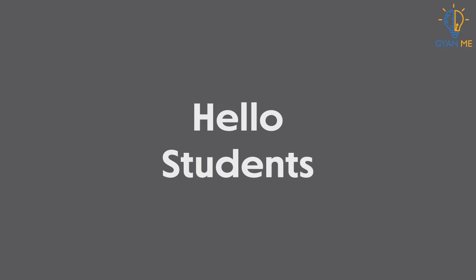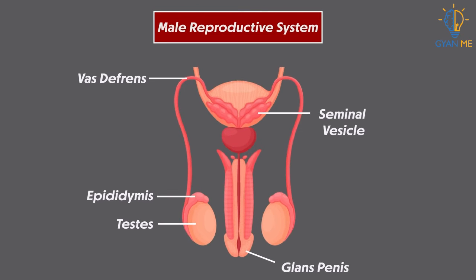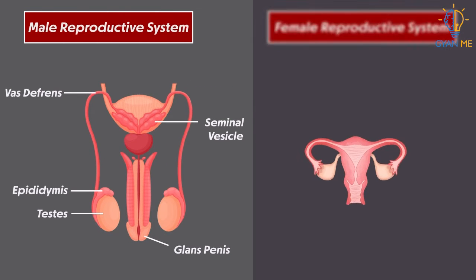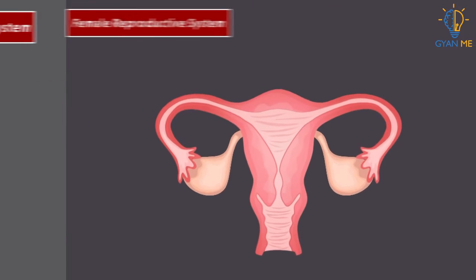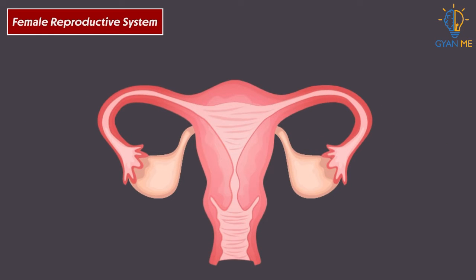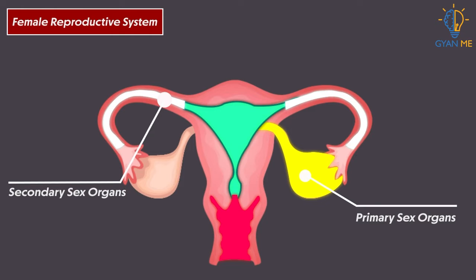Hello students! In our previous video, we learnt about the male reproductive system. Today, let us learn about the structure and function of the female reproductive system. Just like the male system, the female reproductive system also consists of primary sex organs and secondary sex organs.